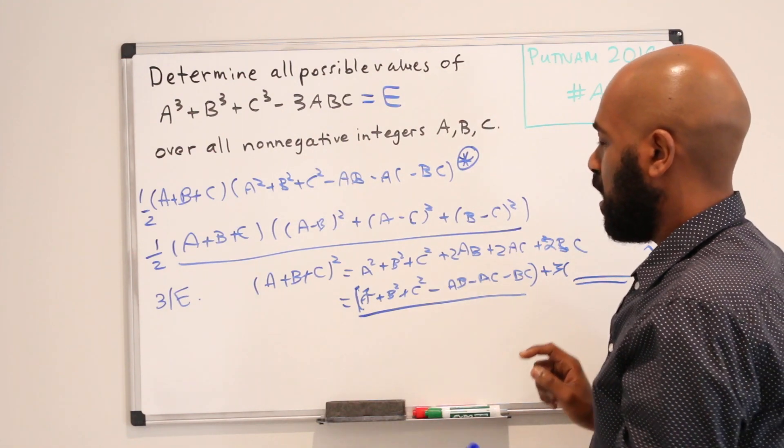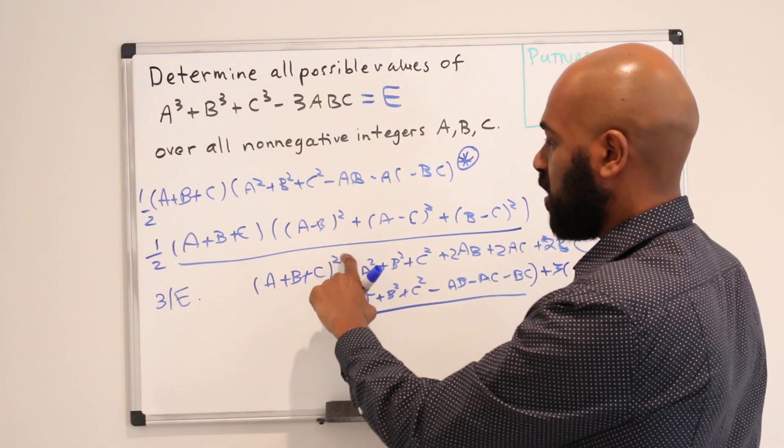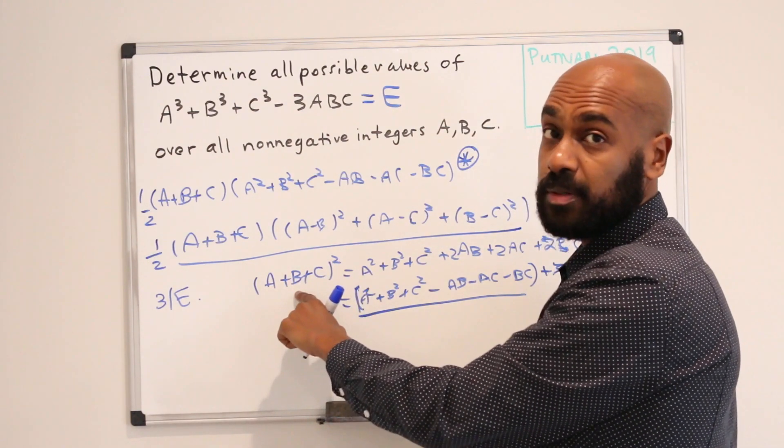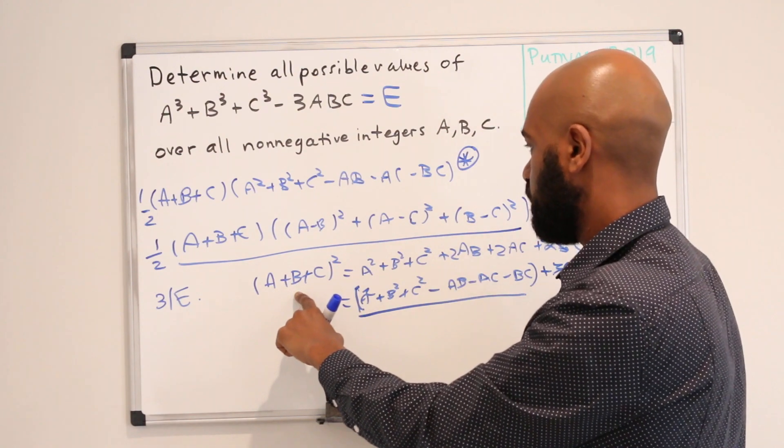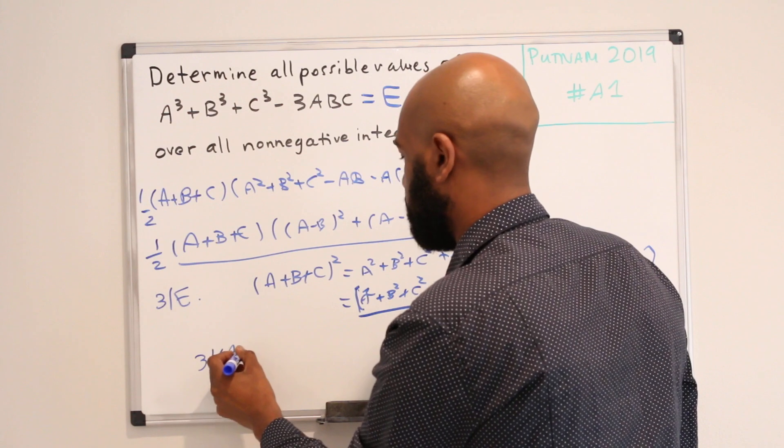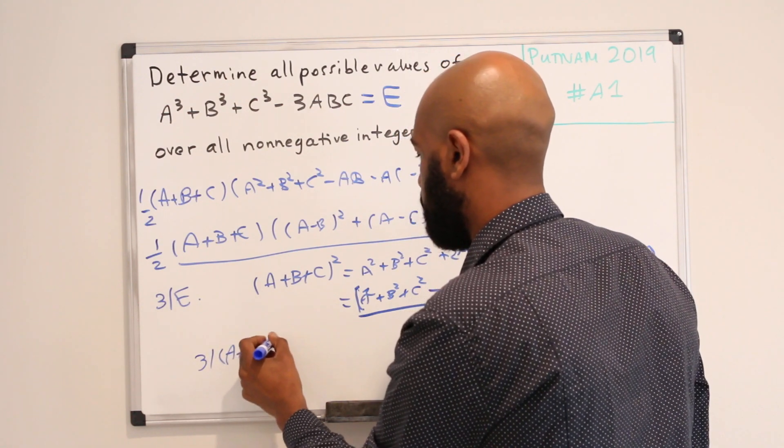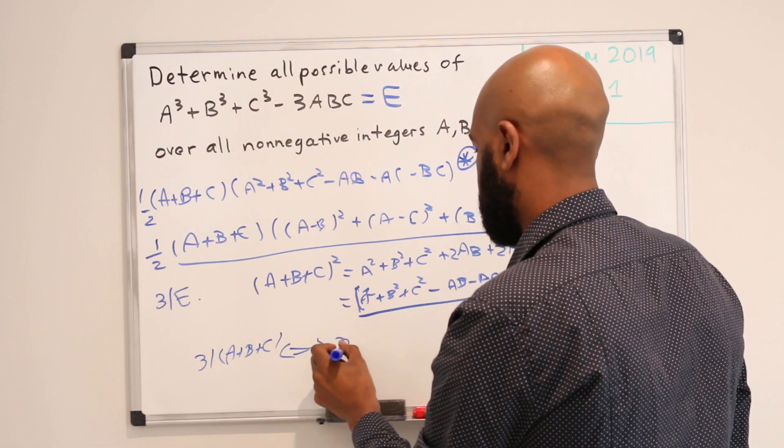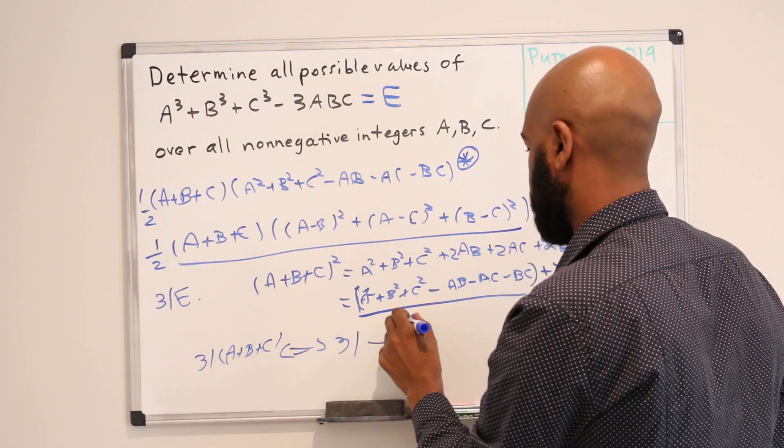Okay, but 3 divides the square of a number if and only if 3 divides that actual number because 3 is a prime. So we have 3 divides the quantity (A + B + C) if and only if 3 divides this expression right here.